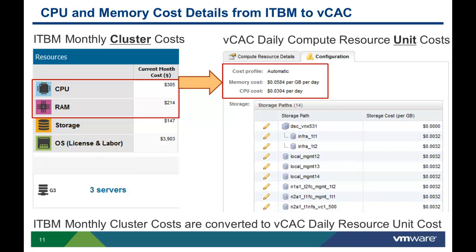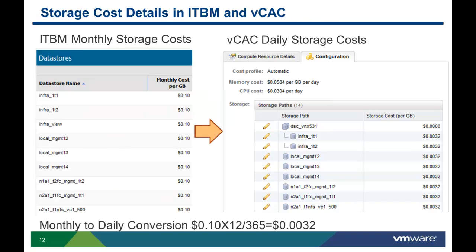VCAC imports this cost information from ITBM and displays it as a daily resource cost in the cost profile. Monthly costs are displayed in ITBM, but those costs are converted to daily resource costs in VCAC. This is accomplished by taking the monthly unit costs in ITBM, multiplying by 12, and dividing by 365 to get the daily costs. The monthly storage resource costs are also imported from ITBM and converted to daily resource costs.